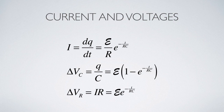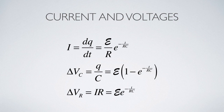Delta V across the capacitor equals Q over C, so substituting our Q function gives an expression rising from zero up to an asymptote of the battery's EMF. For the resistor, the potential difference is the product of current and resistance. Taking the current function and multiplying by R gives a decaying exponential starting at the EMF of the battery and decaying to an asymptote of zero as t approaches infinity.